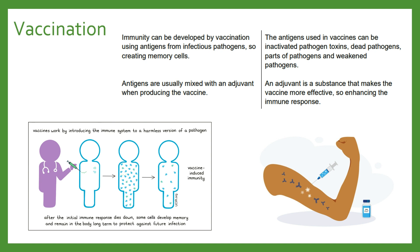Another feature of vaccines is that these antigens are normally mixed with something known as an adjuvant during vaccine production. This is a substance that makes the vaccine more effective by enhancing the immune response. So it is the antigens that trigger the reaction, and the adjuvant which boosts or enhances that reaction.